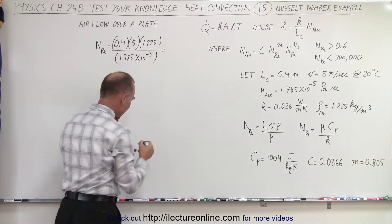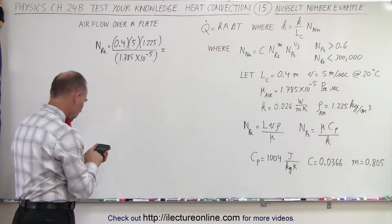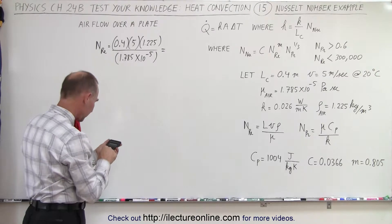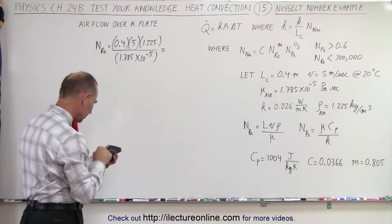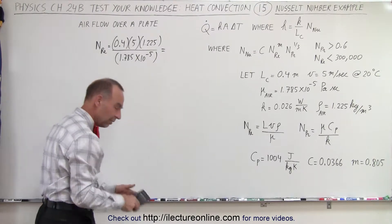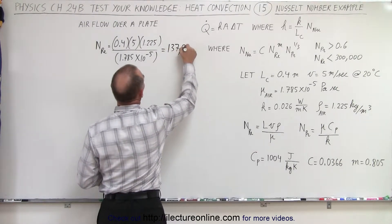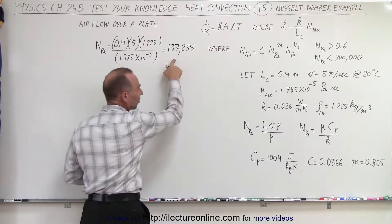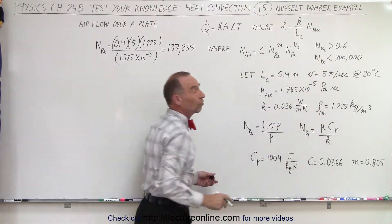So when we do that, we get a Reynolds number. So 0.4 times 5 times 1.225 divided by 1.785 e to the minus 5 equals 137,255. Notice that's still less than the limit that we can use for this particular equation, so we're good to go.